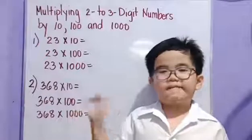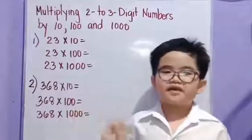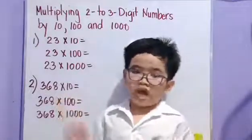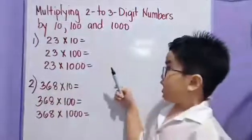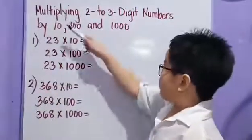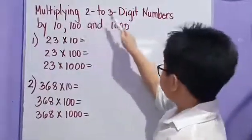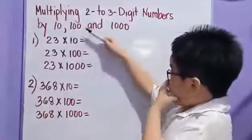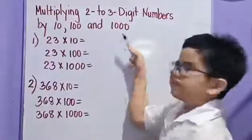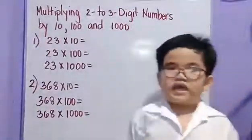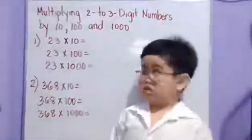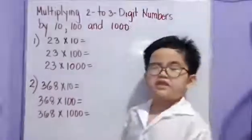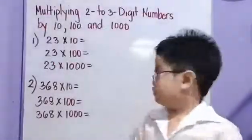Hi guys, welcome back to my channel! Now we will multiply two to three digit numbers by ten, one hundred, and one thousand. Let's get started! Okay, let's have our first example.